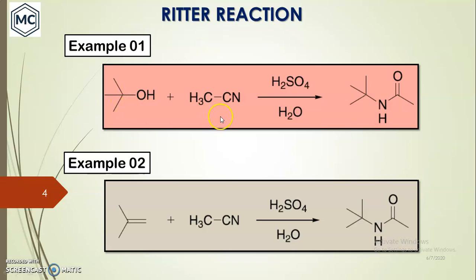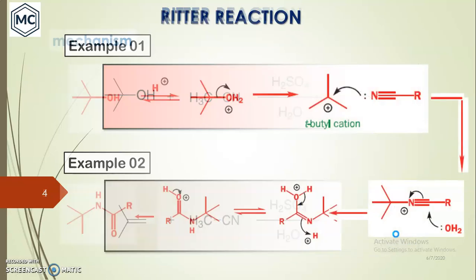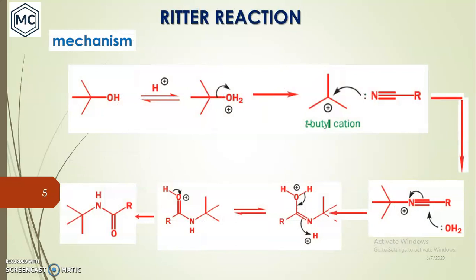A tertiary alcohol with acetonitrile in the presence of a strong acid, sulfuric acid, then water, gives N-alkyl amide. The second example is the original reaction in which an alkene, isobutene, reacts with acetonitrile in the presence of acid and water to give N-alkyl amide. Now let us discuss the mechanism of the Ritter reaction.